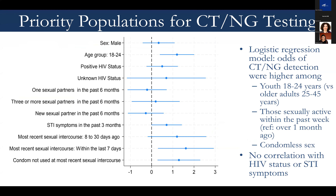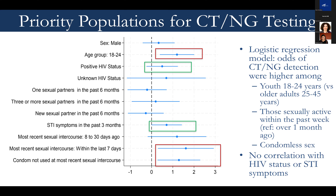And then finally on prioritization: we had very few variables in our screening tool, but it did seem like if we had to prioritize, we could start with a younger age group—but we did see STIs in all age groups. The results of the logistic regression model showed we could emphasize people who report recent sexual activity and sex without using a condom, which is pretty much everyone in our sample. What we did not see is an association with HIV status, at least in our sample. And we saw no correlation with symptoms—that confidence interval touching one emphasizes the point that relying on symptoms isn't the best approach.